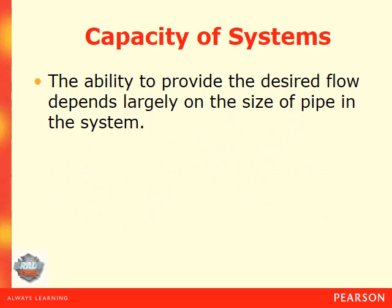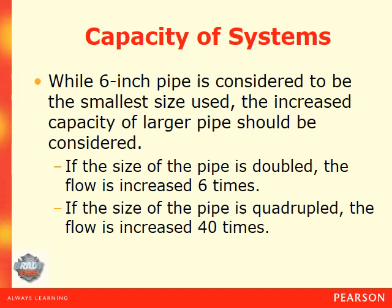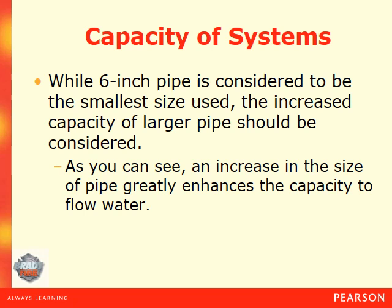The ability to provide the desired flow depends largely on the size of the pipes within the system — the larger the pipes, the more gallons per minute you can get. While six-inch pipe is considered the smallest size used, the increased capacity of larger pipes should be considered. If the size of the pipe is doubled, the flow is increased six times. If the size of the pipe is quadrupled, the flow increases 40 times. An increase in the size of the pipe greatly enhances the capacity to flow water.